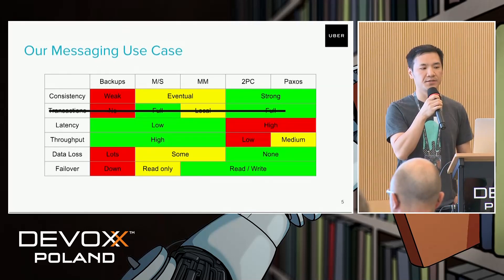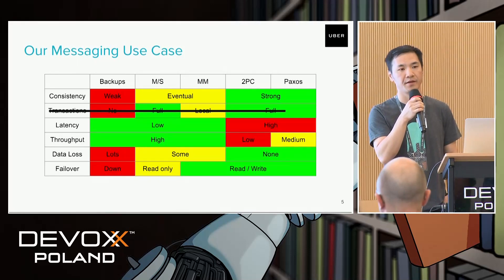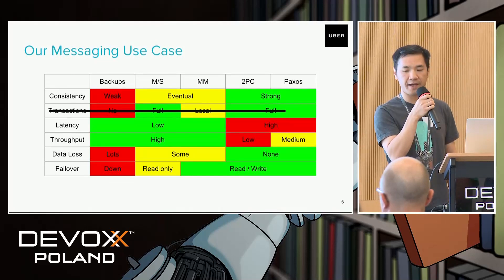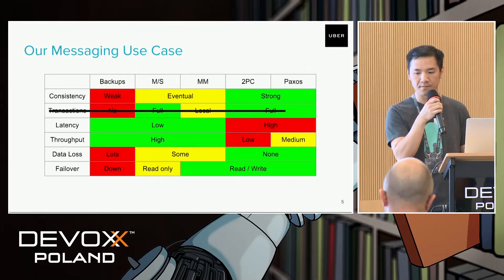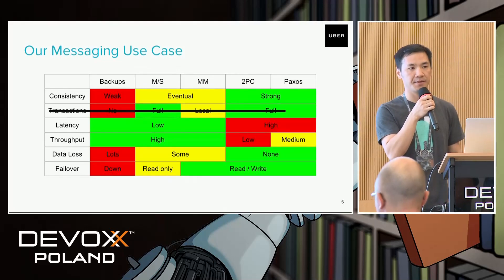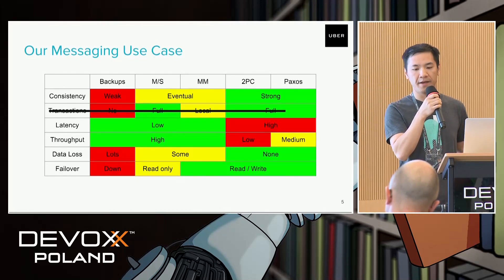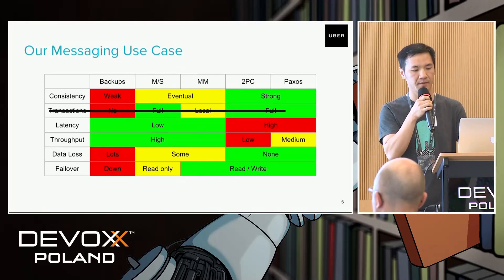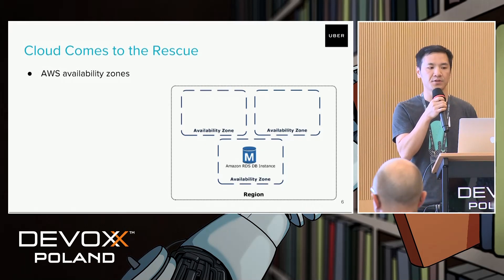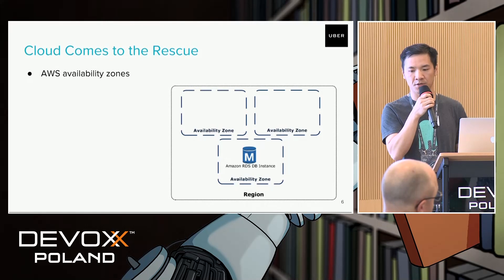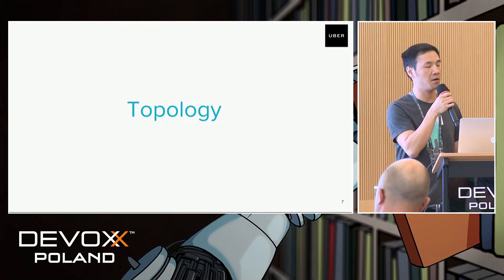In our case we don't need transaction guarantees, but for the other dimensions — consistency, latency, throughput — we need all green. Looking at this table, it's unfortunate that we cannot find even one column with all green. The reason behind it is simply the limit of the speed of light. To overcome this problem we need to find a data center that is close enough to our own data center. Luckily, cloud comes to the rescue — we can find some AWS availability zones that are close enough to our own data centers. With that, I'll hand over to my colleague Hong Liang to talk about our topology and setup.